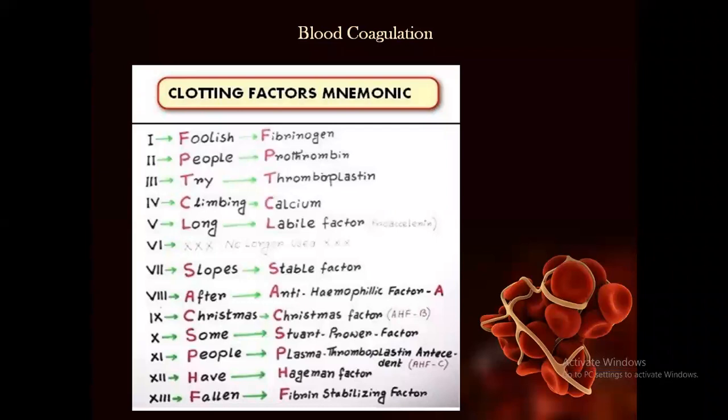Blood coagulation includes 13 clotting factors. If you need to remember the names, here is a very good mnemonic provided by medocrine.com: 'Foolish people try climbing long slopes after Christmas, some people have fallen,' where F stands for fibrinogen, factor 1.